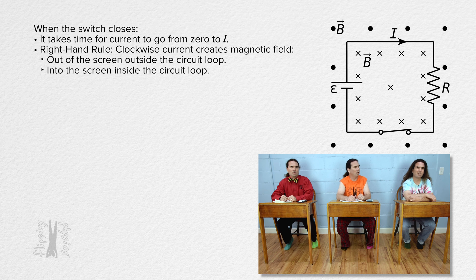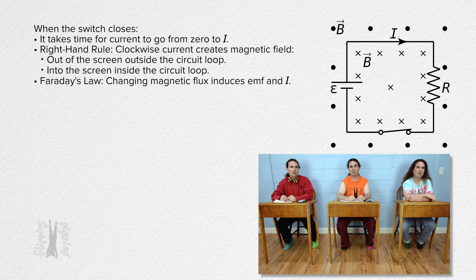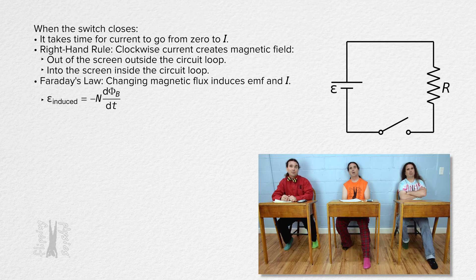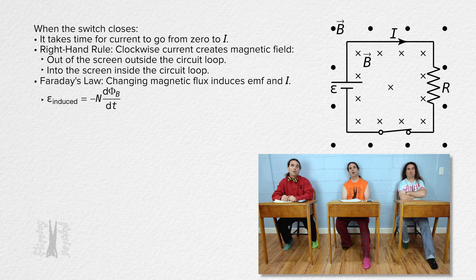But why does that matter? Remember, Faraday's law states that an induced EMF is created when magnetic flux changes. The induced EMF equals the negative of the number of loops times the derivative of the magnetic flux through one loop with respect to time. Before the switch is closed, there is zero current in the circuit, so zero magnetic flux through the loop. After the switch is closed, the current in the circuit has created magnetic flux through the loop. So there must be an induced EMF in the circuit caused by the change in the magnetic flux through the circuit loop.